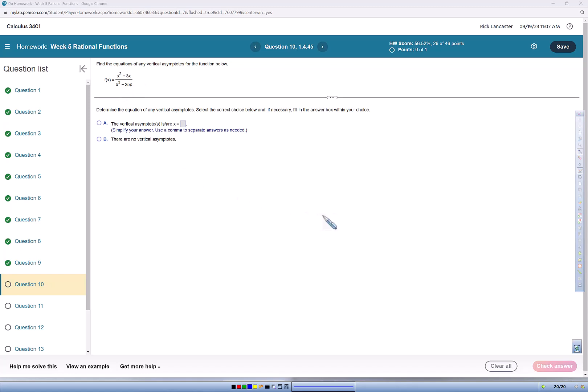So if all we're interested in is finding the vertical asymptotes, we're going to factor the numerator and the denominator. So that gets me to x times x plus 3 over x times x squared minus 25.